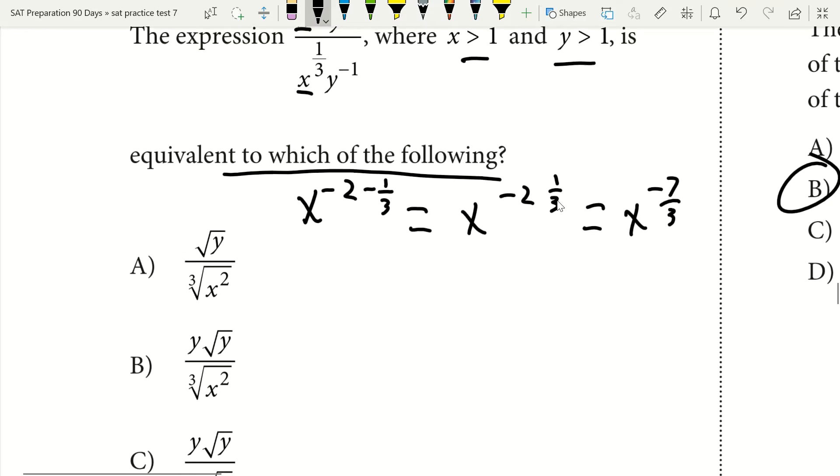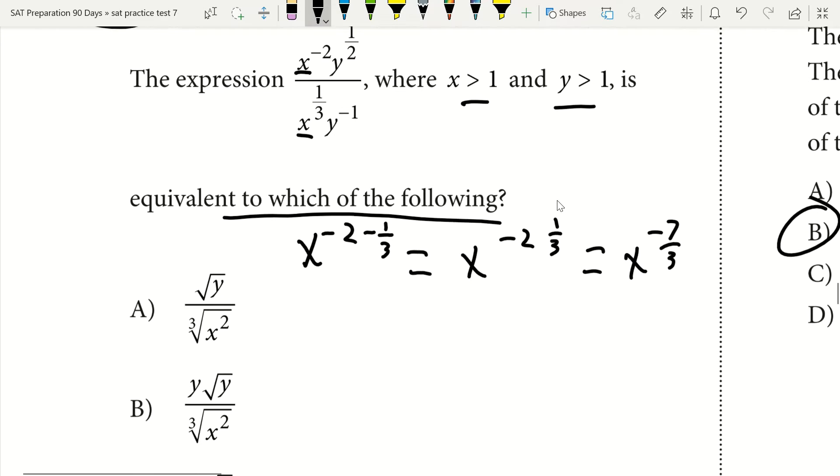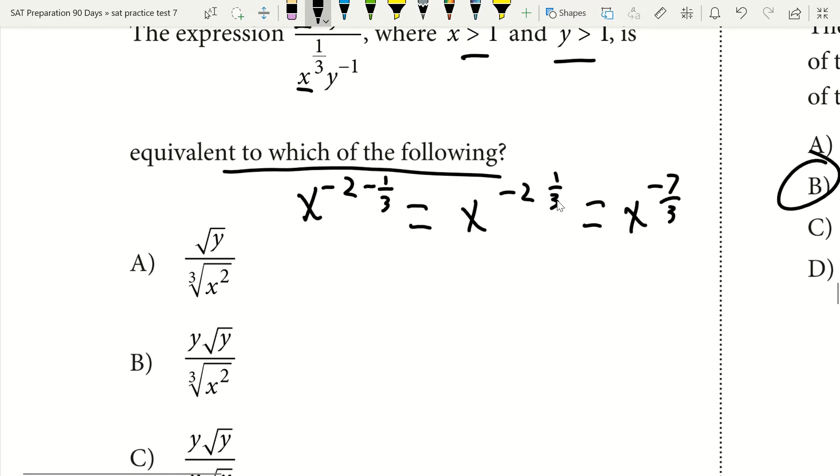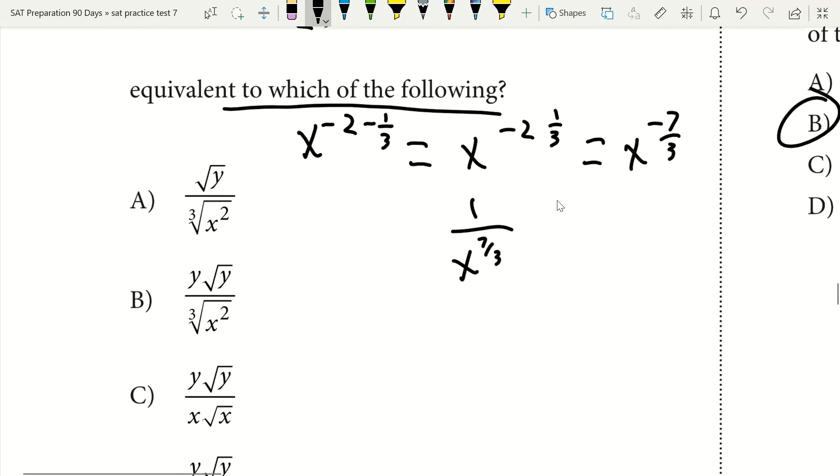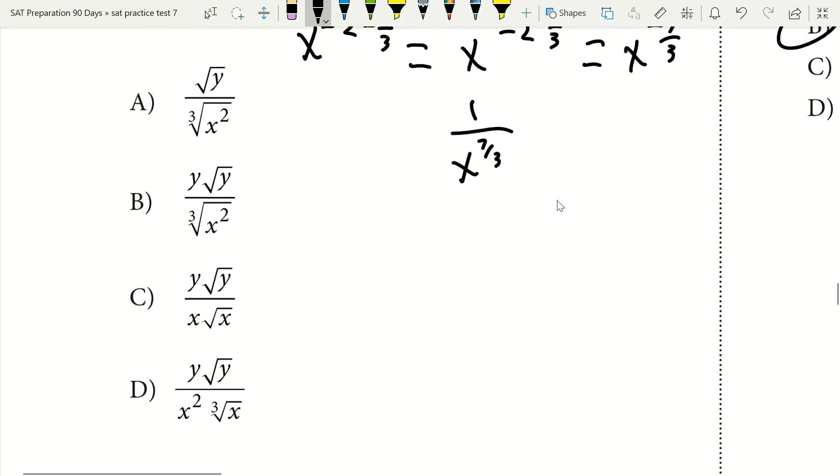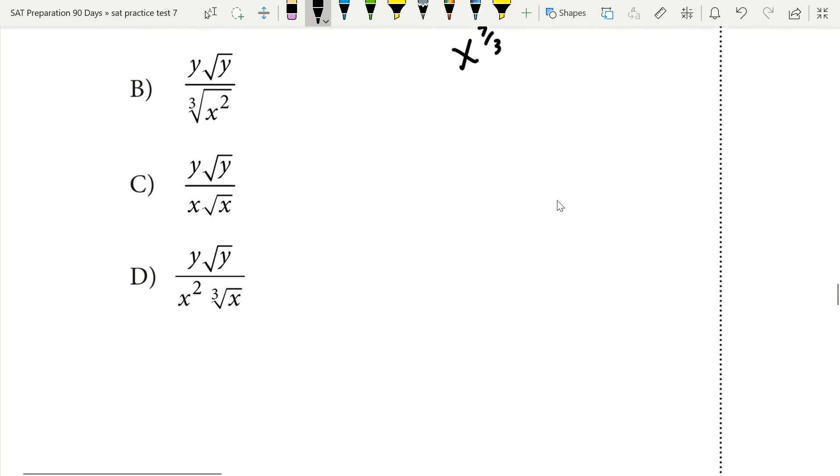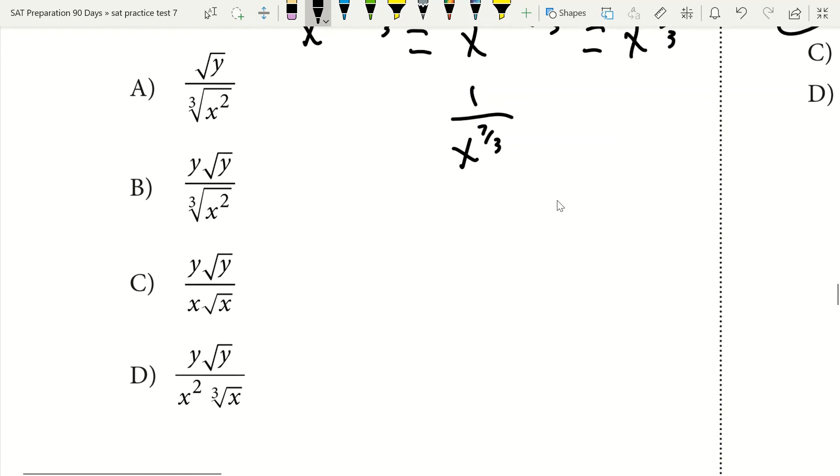Now what you can do then is just find which denominator. Since this is simplified, if you have a negative exponent, so in this case x to the negative seven over three, that's the same as one over x to the seven-thirds in the denominator. That's what that negative sign means. So now I know that my x has to be in my denominator. I see that that's true in a, b, c, and d, so I can't get rid of anything just based on that. But when I look at x being to the power of seven-thirds in my denominator, I see that I only have that in option d.